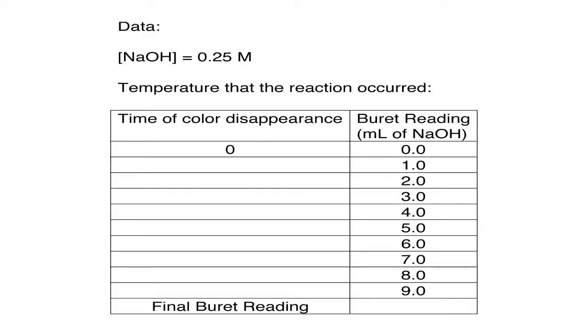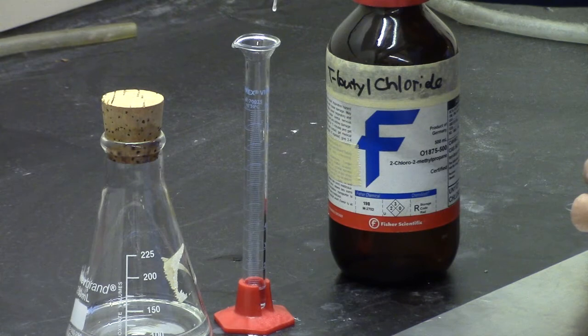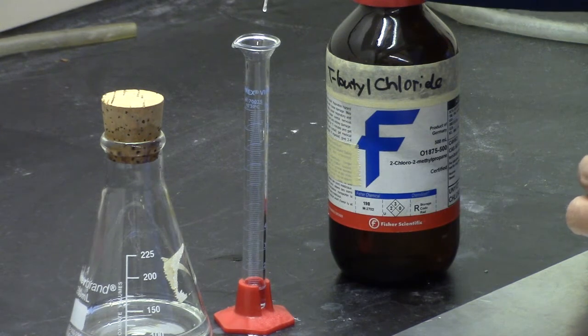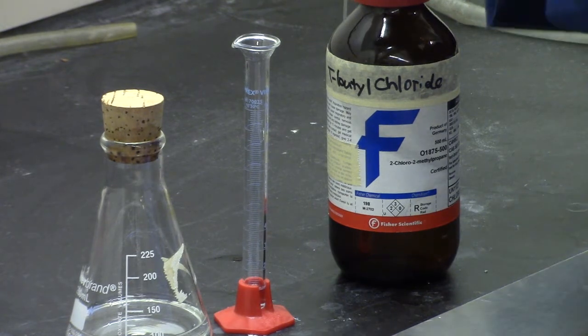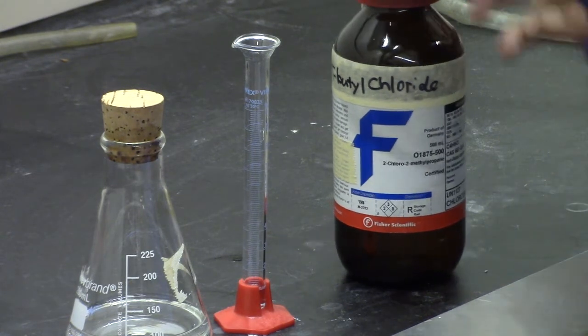Collection of kinetics data: Prepare a table prior to performing the experiment to collect the data. In the hood, measure out 1 milliliter of tertiary butyl chloride into a 10-milliliter graduated cylinder. Use a pipette to help get exactly 1 milliliter.